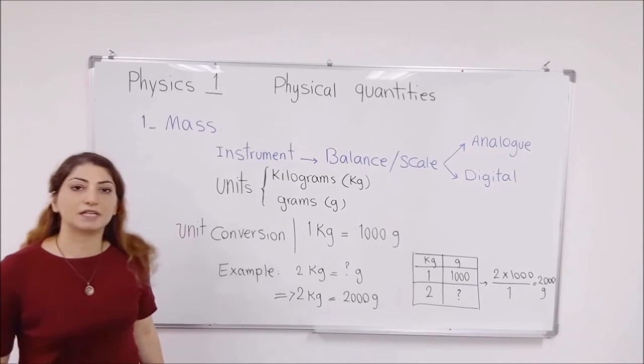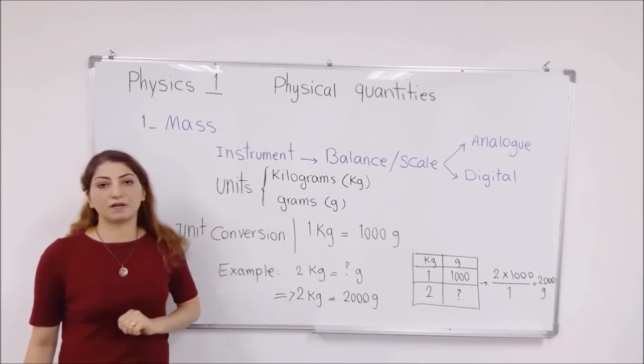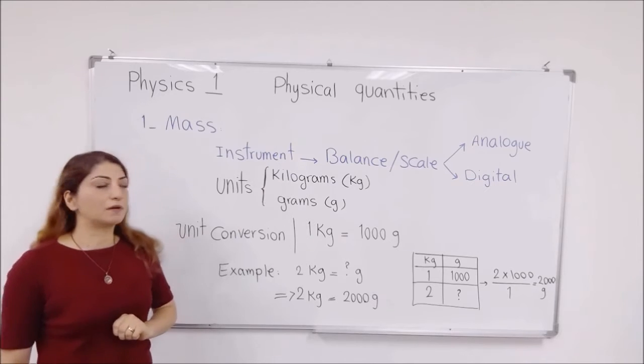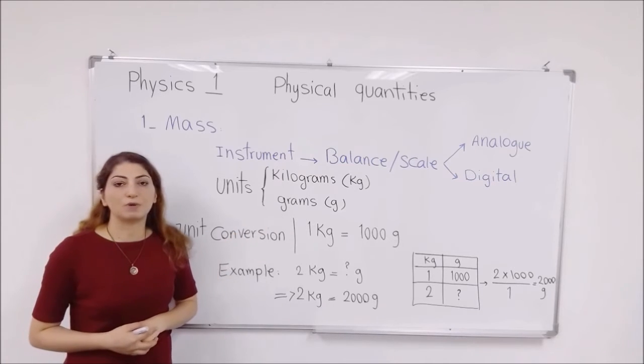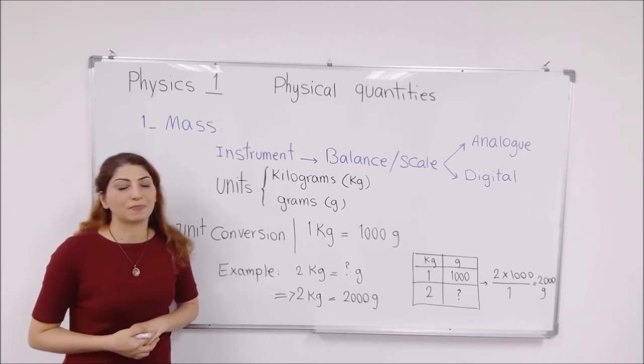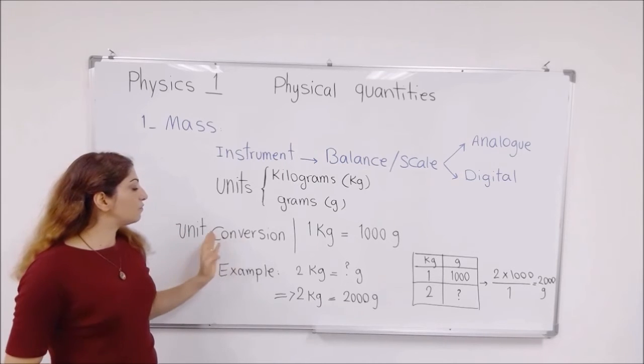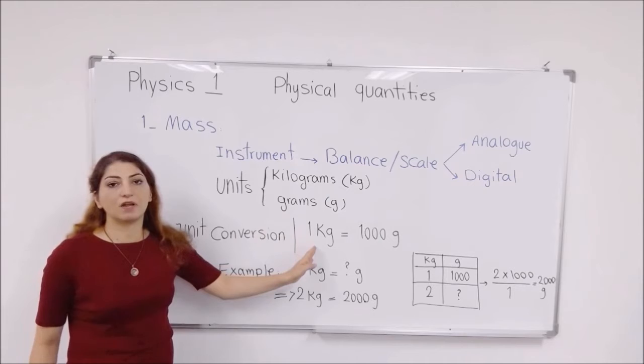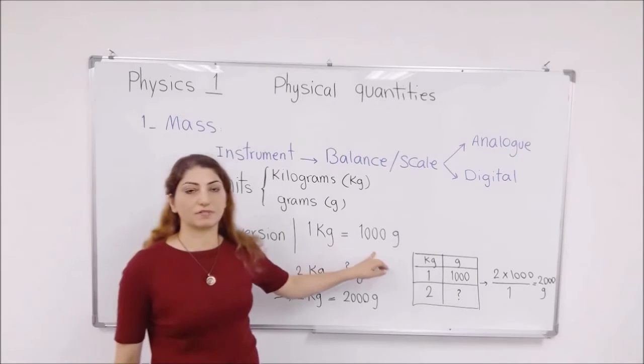One of them is kilograms, which is the bigger quantity, and the other one is grams, which is a smaller unit for this quantity. Each one kilogram equals to one thousand grams.